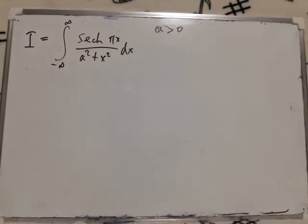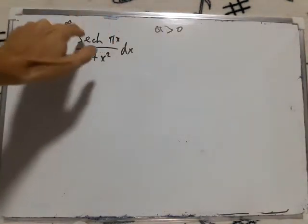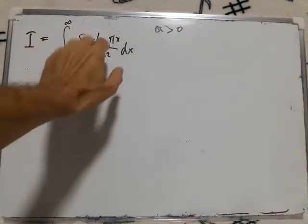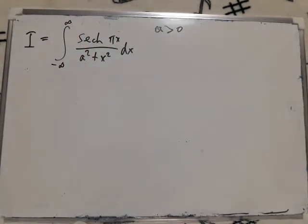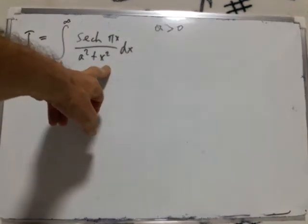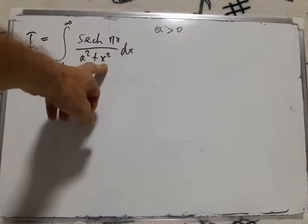This integral, if we just had this, we'd know how to do it. If we didn't have the sech on the top, this would be straightforward. We'd use a semicircular contour. The problem is sech, which is one over cosh, has infinitely many singularities going up the imaginary axis. But we can't use a rectangular contour because of the a squared plus x squared. We can never get the same function again if we replace x by x plus 2πi.